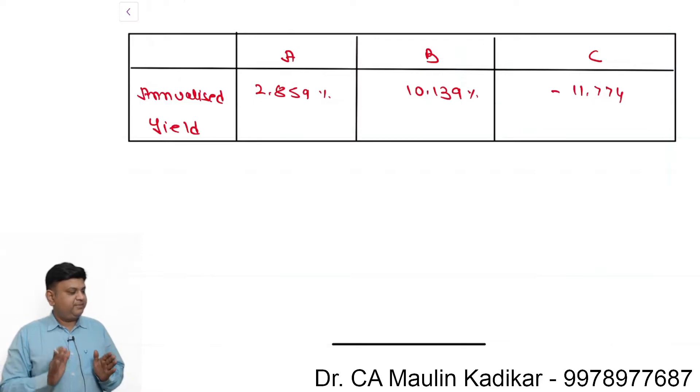Otherwise, we can say that if past is expected to continue in future, then of course the C mutual fund investment you should sell out because it has negative returns. A mutual fund has returns but it is substantially less, not even covering the risk-free rate of return, so that investment should also be shifted.